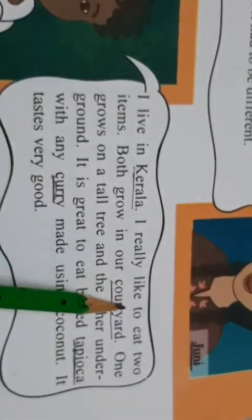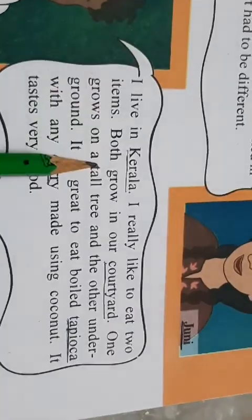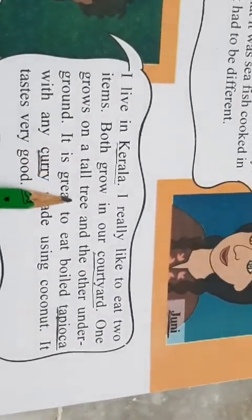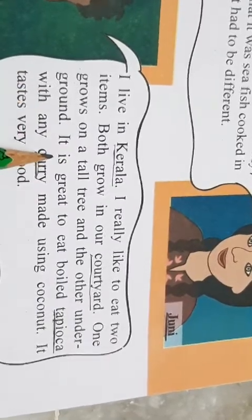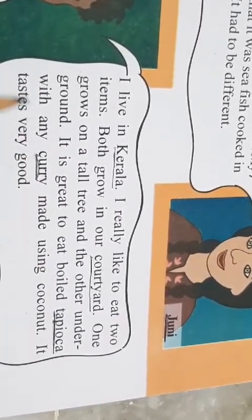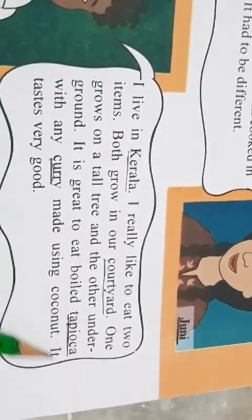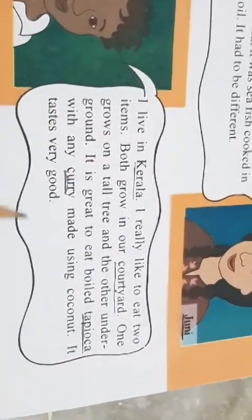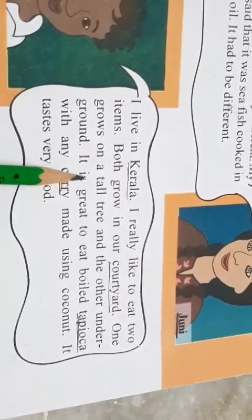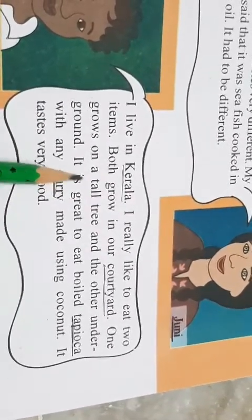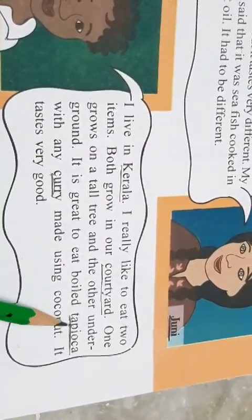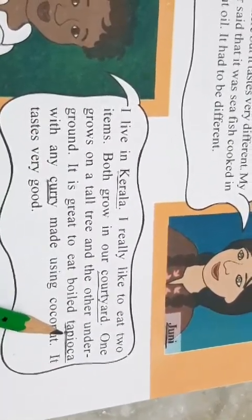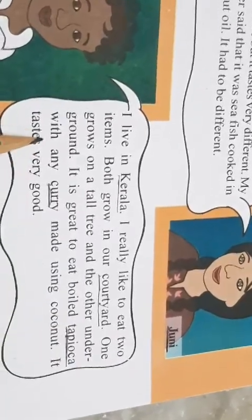So this boy is Thomas. I live in Kerala. I really like to eat two items — both grow in our courtyard. One grows on a tall tree — the coconut — and the other underground — tapioca. It is great to eat boiled tapioca with any curry made using coconut. It tastes very good. Tapioca is a root vegetable which you can eat with different things.